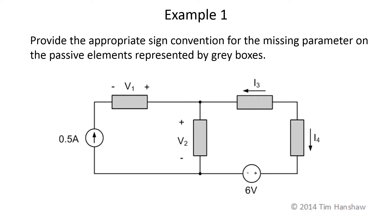For example, for element 1, the voltage polarity is given. It is assumed that the voltage at this terminal on the right of the element is higher than the voltage at the other terminal. We have to assign our current sign convention such that that current is entering the positive voltage terminal.